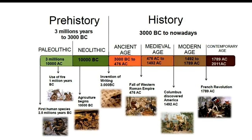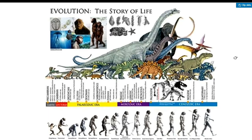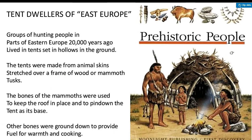Here is our timetable: the prehistoric period spans from about 3 million years ago to 3000 BC, while the historical period runs from 3000 BC to the present day. The prehistoric period covers the age of dinosaurs and homo sapiens and their evolution.